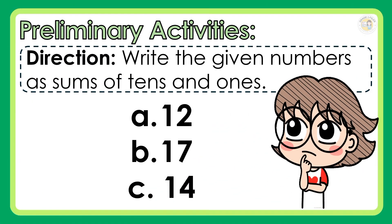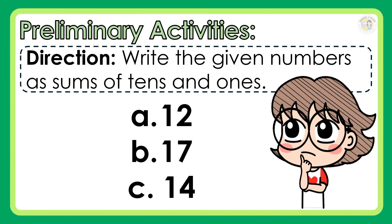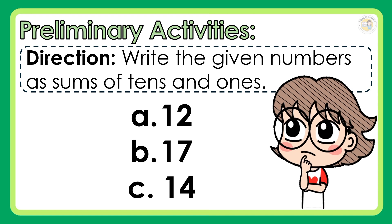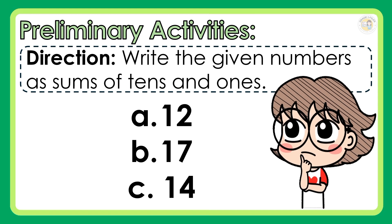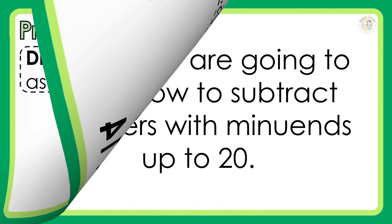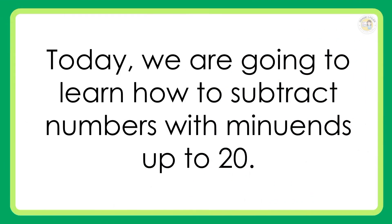Preliminary activities. Direction: write the given numbers as sums of tens and ones. A: 12, B: 17, C: 14. Today, we are going to learn how to subtract numbers with minuends up to 20.